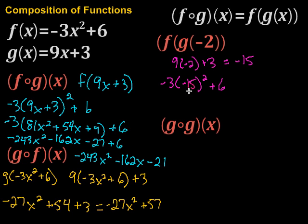Order of operation says we need to do that squaring first. Negative 15 squared would be 225. So we have negative 3 times 225 plus 6.